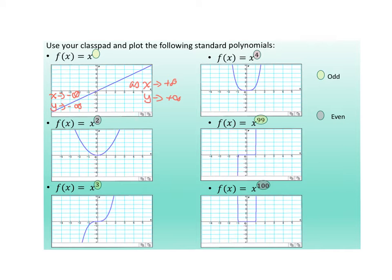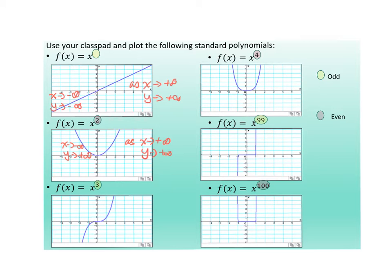For the even, as x approaches positive infinity, y approaches positive infinity, and as x approaches negative infinity, y also approaches positive infinity. So for an odd polynomial, if x goes towards infinity, y goes towards minus infinity — think about y = −x, it still holds. For minus x squared (even), as x goes towards positive infinity, y goes towards negative infinity, and as x goes towards negative infinity, y goes towards negative infinity. This is how you describe it.